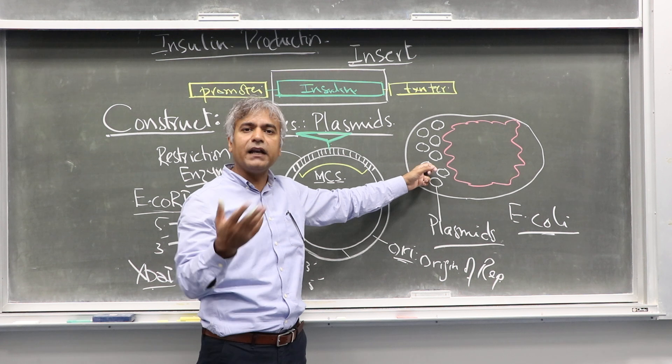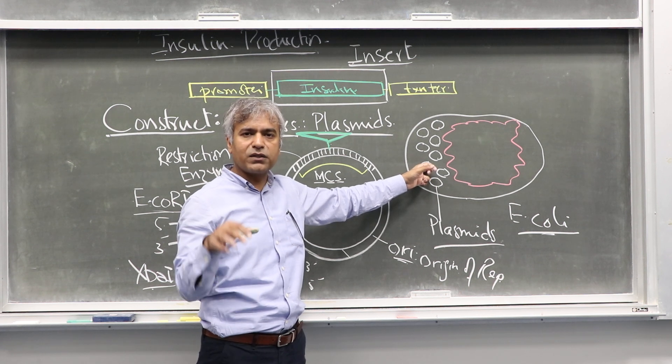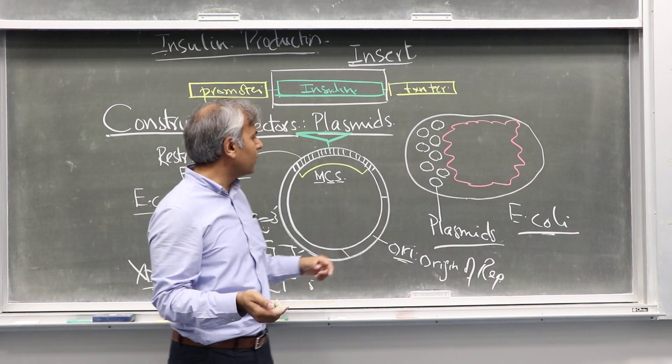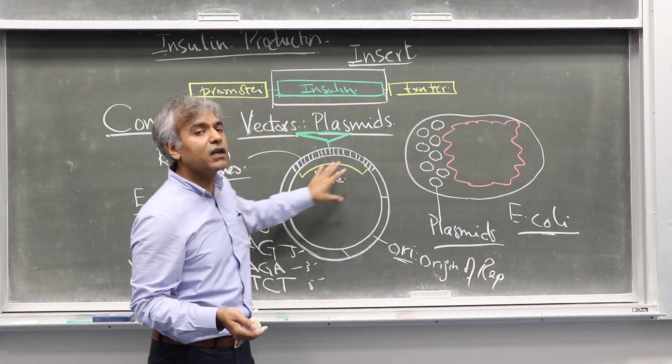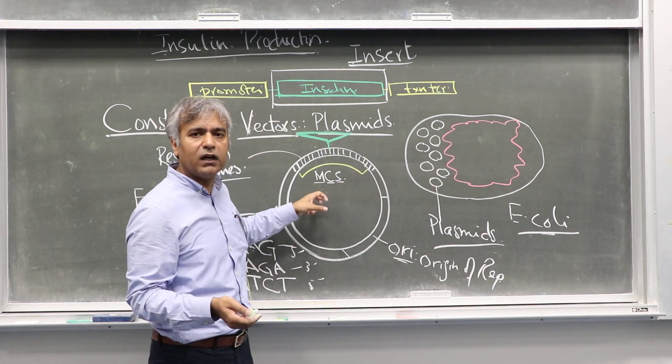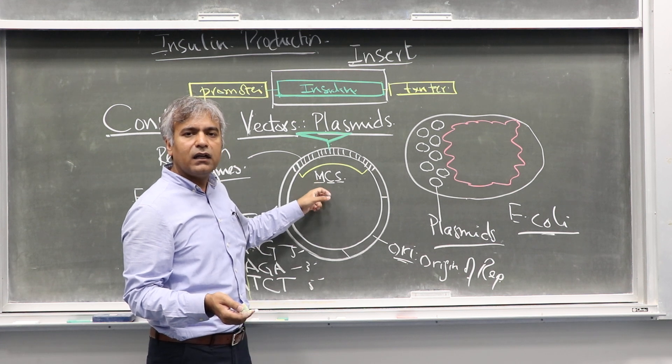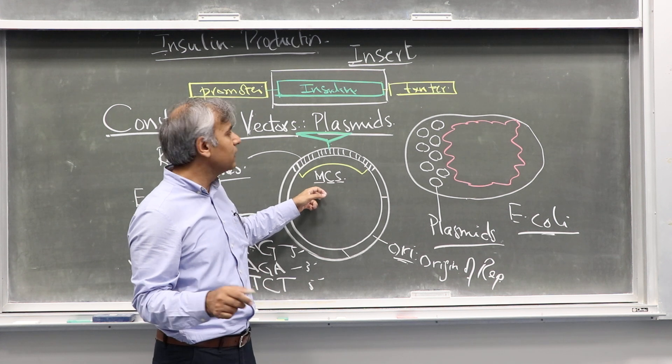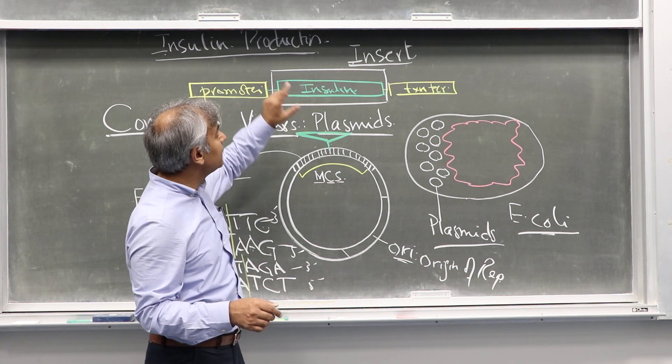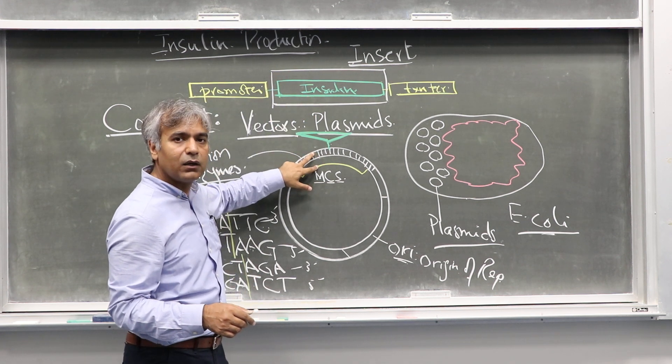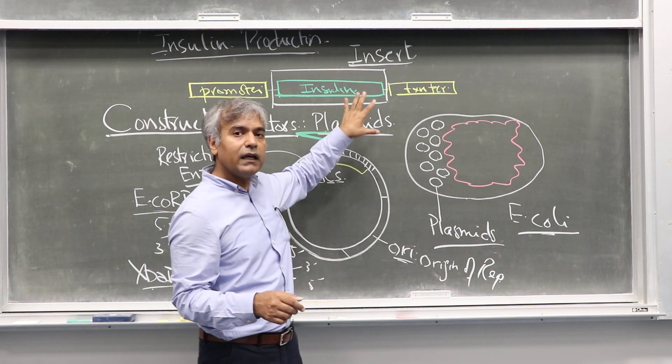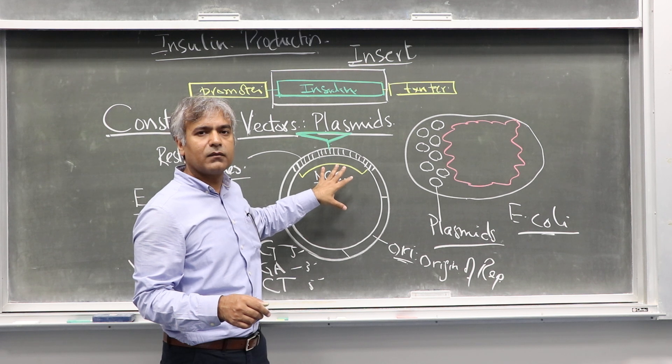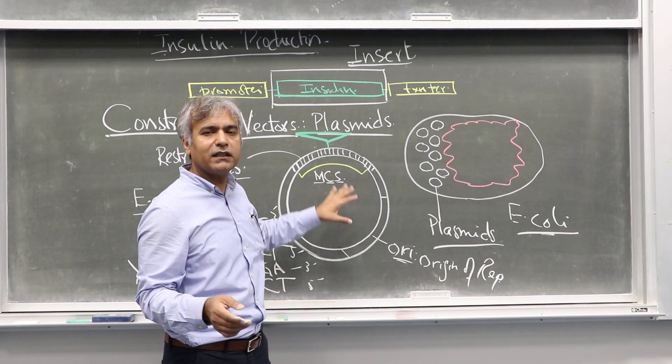Once we finish the ligation, the next step is bringing this ligation product into the bacteria, and that is called transformation. That will be our next part. So we stop this part here. In the next part, you will see the transformation part, how we confirm that our ligation of insulin gene with vector is really successful or not. You have to watch the next part then.